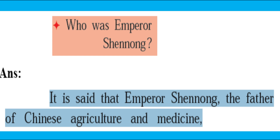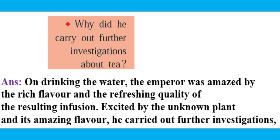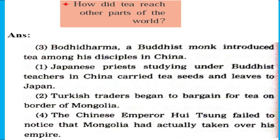Question seven: Who was Emperor Shenong? Answer: Emperor Shenong is said to be the father of Chinese agriculture and medicine. Question eight: Why did he carry out further investigation about tea? Answer: On drinking the water, the emperor was amazed by the rich flavor and the refreshing quality of the resulting infusion. Excited by the unknown plant and its amazing flavor, he carried out further investigation.